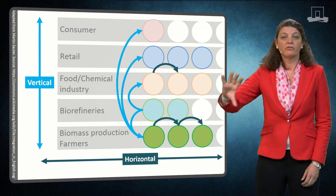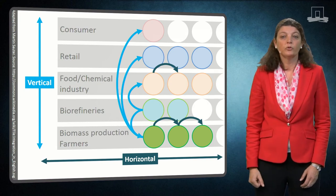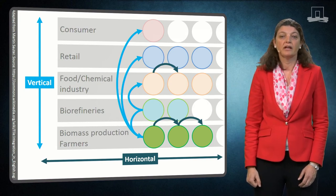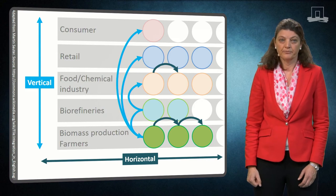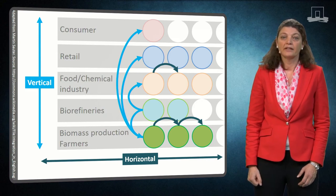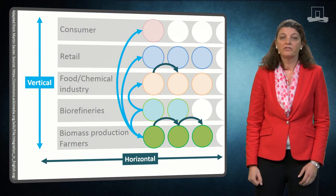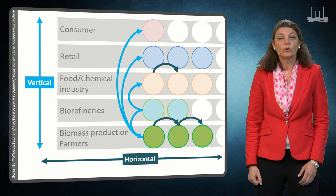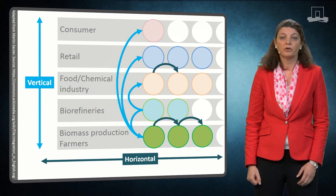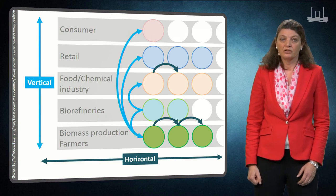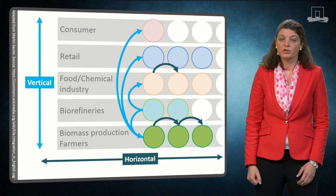While vertical collaboration occurs between firms operating on different supply chain levels, horizontal collaboration occurs between two or more firms operating at the same supply chain level. Issues like seasonality of biomass production, uncertainty related to price and productivity of biomass but also the variety of biobased products makes collaboration an important concept especially in the biobased supply chain.